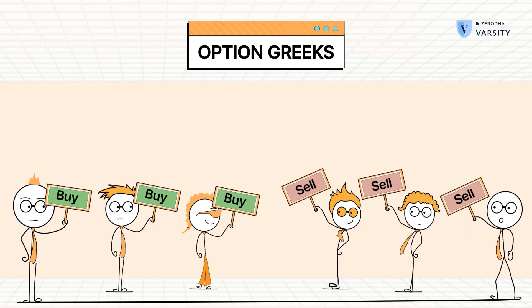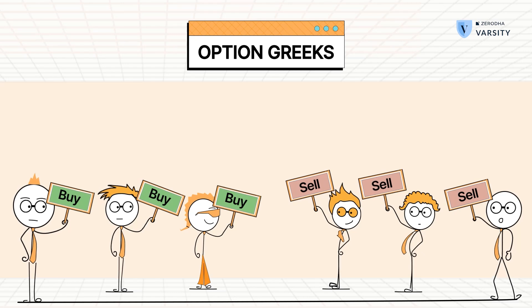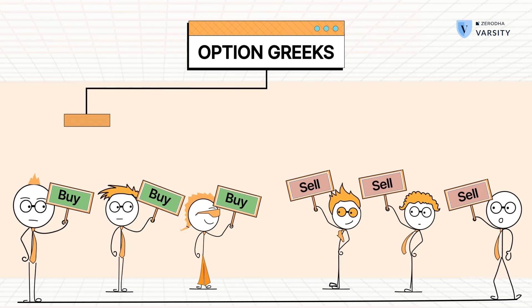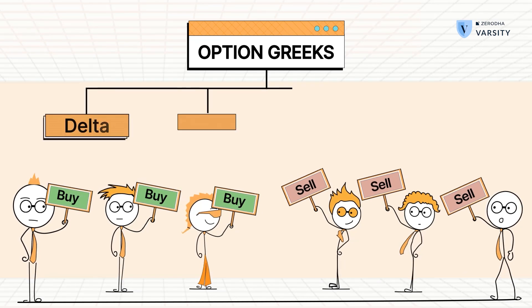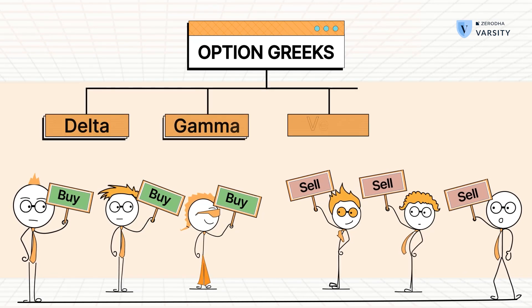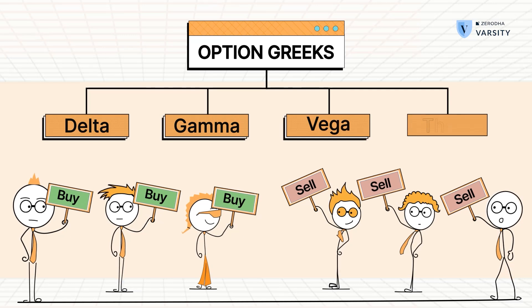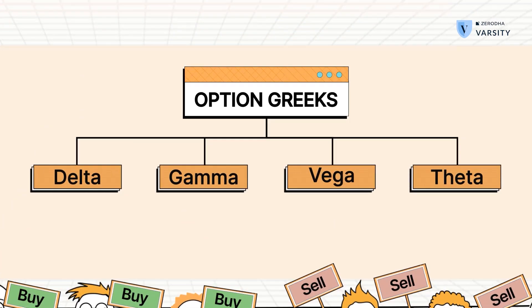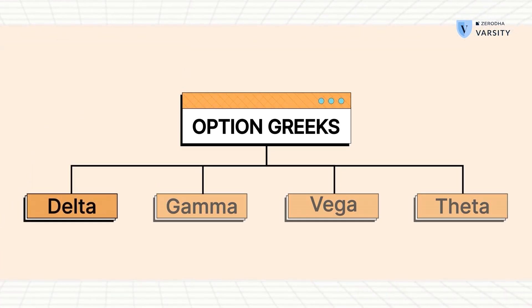There are four important option Greeks that you need to understand, and they are the delta, gamma, vega, and the theta. In this video, let's try and understand the delta of an option.